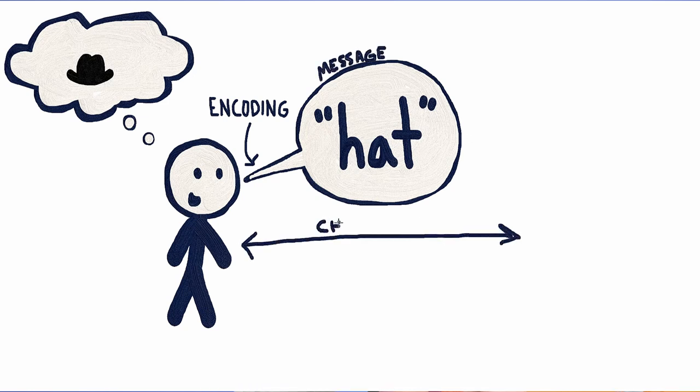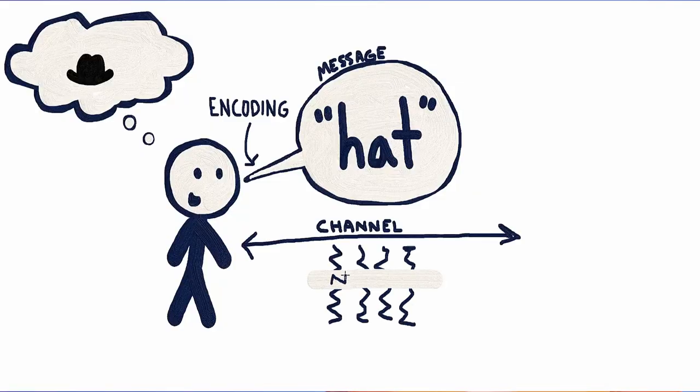That message then has to travel to the other person through a channel. That could be the air between you and the other person, or in this case, between you and me, it's YouTube and your speaker. As the message travels along the channel, it's likely to encounter noise, something that interferes with or distorts your message. Maybe a dog starts barking as you speak. Maybe he's wearing a top hat. Maybe the other person is preoccupied with something else. Or maybe your speaker volume isn't quite loud enough.